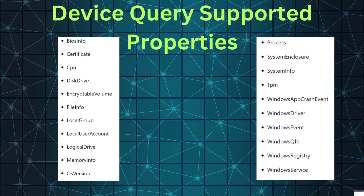Device Query supports a great range of entities, including: BIOS information, certificate, CPU, disk drive, encryptable volumes, file information, local groups, local user account, logical drives, memory information, OS version, process, system enclosure, system info, TPM, Windows app crash events, Windows driver, Windows event, Windows QFE, Windows registry, and Windows services.